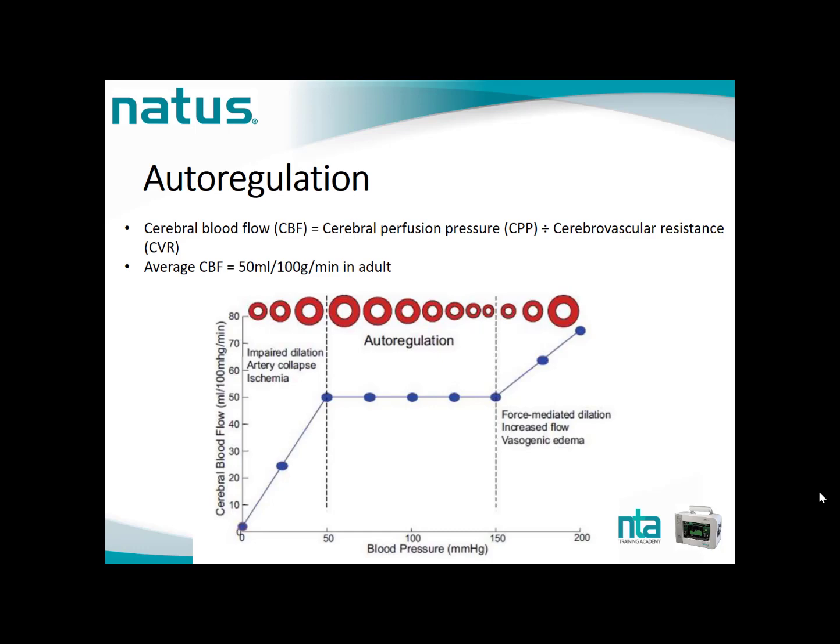Autoregulation helps maintain a constant cerebral blood flow at different blood pressures, represented by the equation: CBF equals cerebral perfusion pressure divided by cerebral vascular resistance. Normal CBF is equal to 50 mL per 100 g per minute in adults.